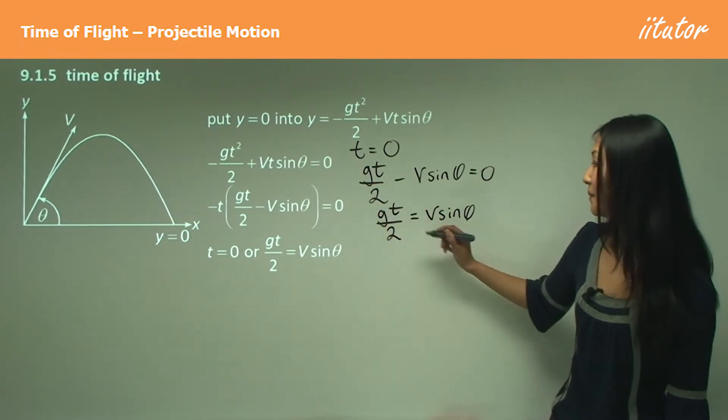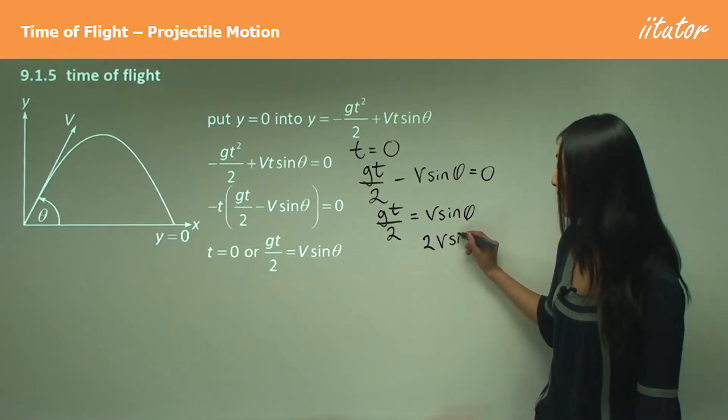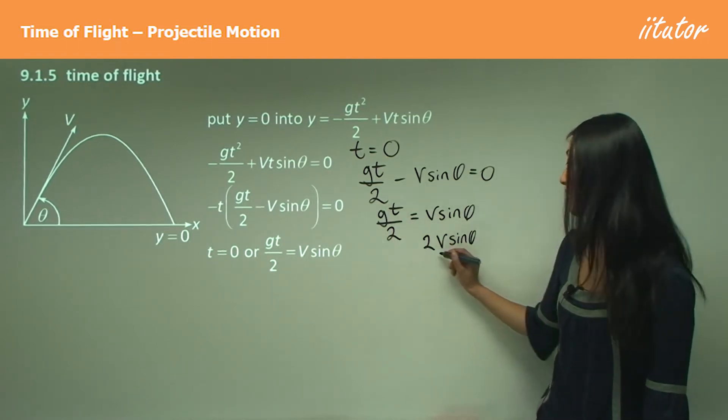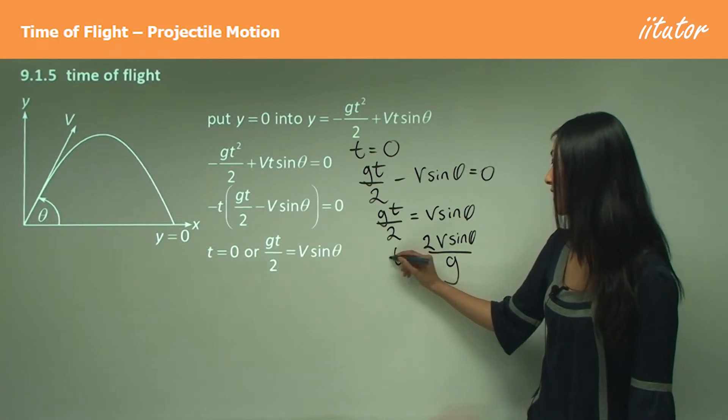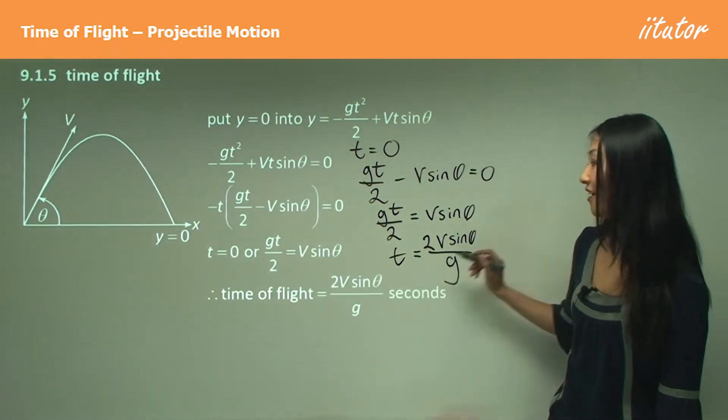Either t equals zero or this equals v·sin(θ), and from here we can work out what t equals to as well. Multiply the 2 over, so that becomes 2v·sin(θ), and divide by the g. So t therefore equals 2v·sin(θ)/g.